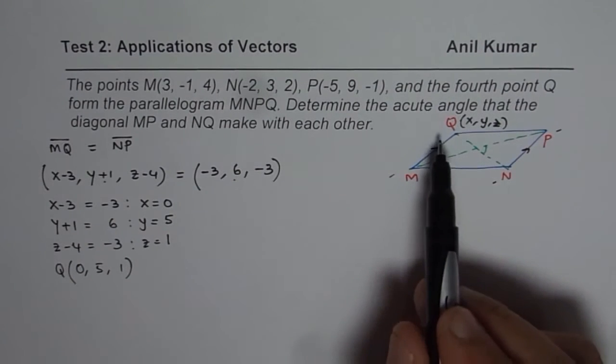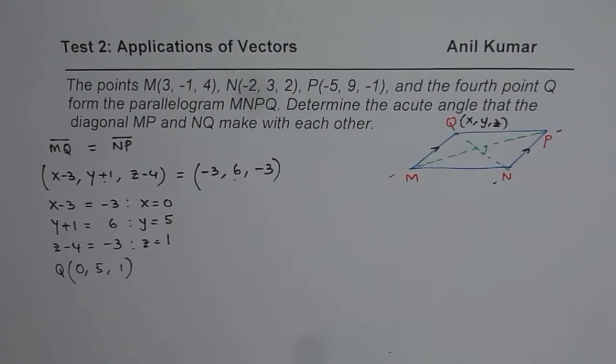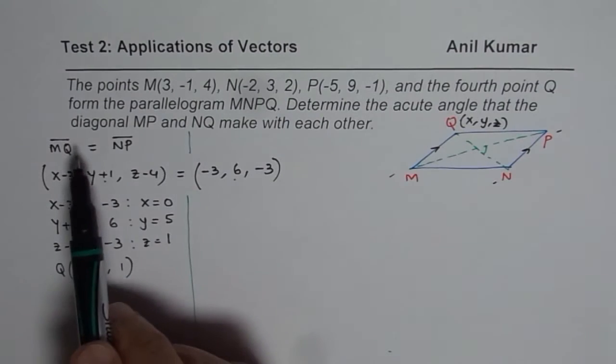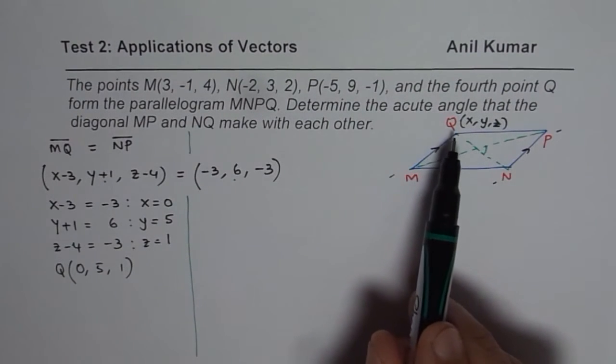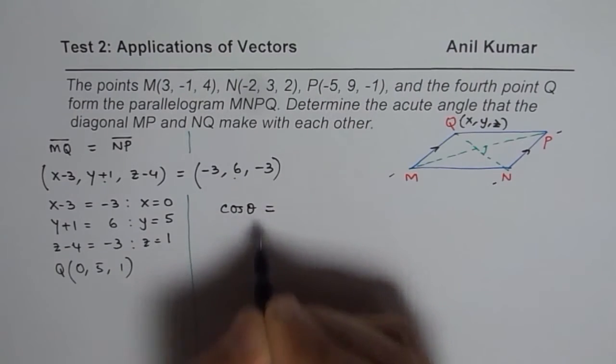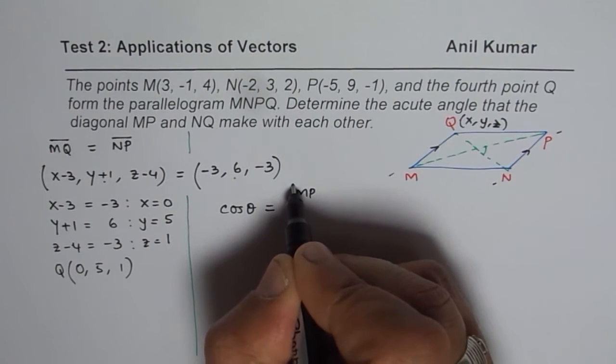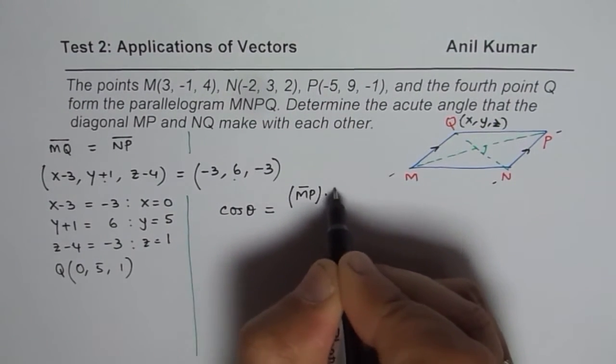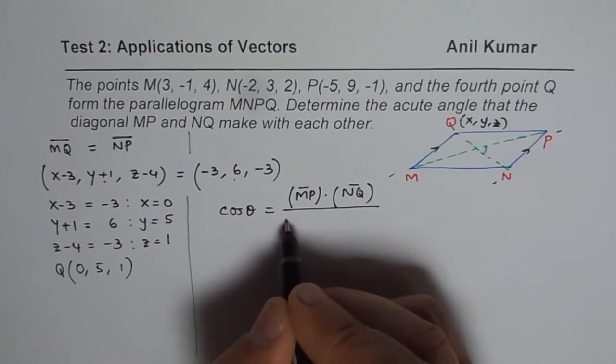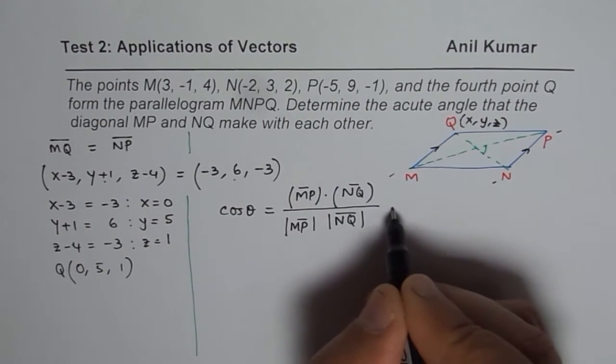Now, we know the coordinates of point Q. We can now find the angle between the two. So if you need to find angle between, let's do it on the right side now. So determine the acute angle for diagonals MP and NQ. So we can use dot product to find the angle. So we know cos θ is equal to dot product of MP and NQ divided by their magnitudes. So divided by the magnitude of MP times NQ. So that is how we can find the angle between them.